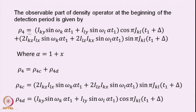What does rho4 contain? Rho4 contains these terms: IKY sin(ωK·α·t1) plus ILY sin(ωL·α·t1), multiplied by cos(π·JKL·(t1 + δ)). Additionally there are two terms: 2·IKZ·ILX sin(ωK·α·t1) plus 2·ILZ·IKX sin(ωL·α·t1), multiplied by sin(π·JKL·(t1 + δ)). The first two terms have J-modulation for the period t1 plus delta, and delta is constant so the t1 dependence of coupling happens during t1. The chemical shift terms ωK·α·t1 and ωL·α·t1 come from the chemical shift evolutions of the K and L spins.